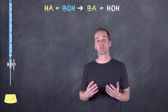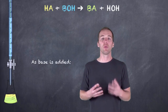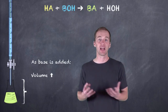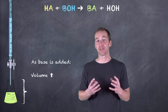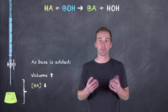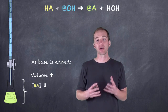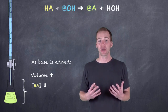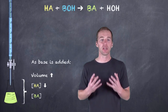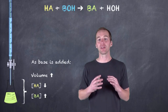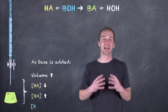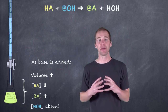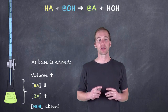Let's take a look at this titration as it progresses. As we first begin to add base — our titrant — the volume is going to start to rise in our Erlenmeyer flask containing the analyte. The concentration of the acid is going to decrease, partly because the volume of the solvent has increased, but also because the hydroxide ions being introduced are reacting with the hydronium ions and producing products. The concentration of the salt is going to start to increase as well. The base itself will still be negligible in the analyte solution because as soon as it's introduced, it's converted into salt and water.